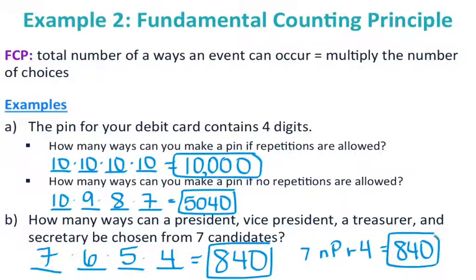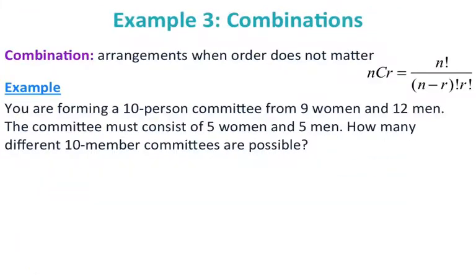Combinations is when order does not matter, whereas for permutations, order matters. We did do combinations with the binomial theorem, but that was just computing a number. Now we're going to do combinations in a real context.